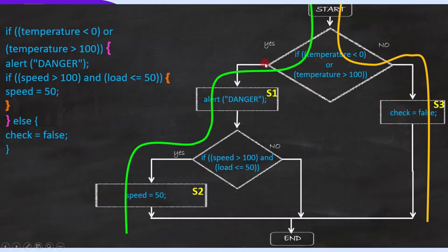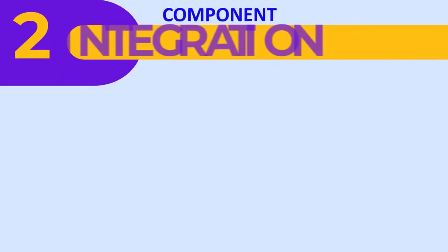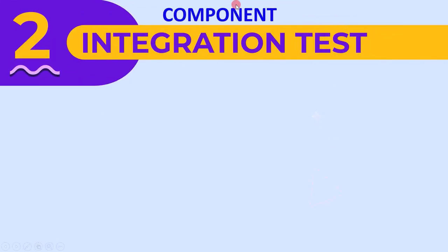If the flow with the logic is not as expected, we will find a data flow problem. If the decisions are wrongly implemented, we will detect incorrect code and logic. Remember, incorrect functionality, data flow problems, and incorrect code and logic defects are examples found in component testing. Let's now move to component integration testing.